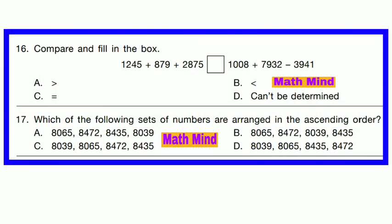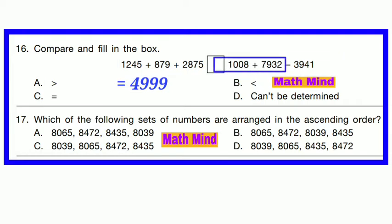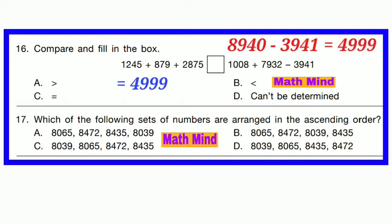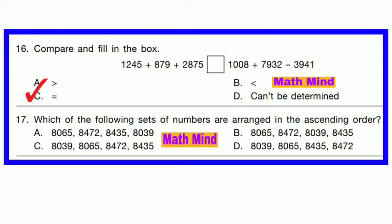Question No. 16: Compare and fill in the box to find the relationship between both sides. Left hand side: 1245 + 879 + 2875 = 4999. Right hand side: 1008 + 7932 = 8940, then subtracting 3941 from 8940 gives 4999. Both sides are equal. Option C is correct.